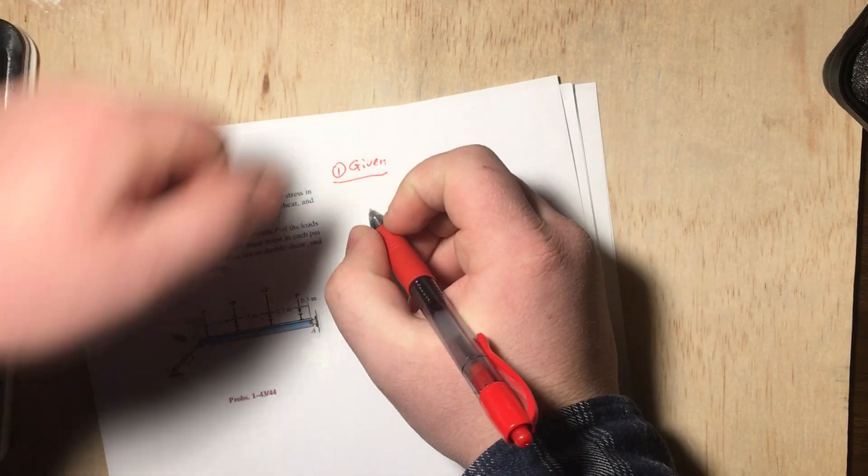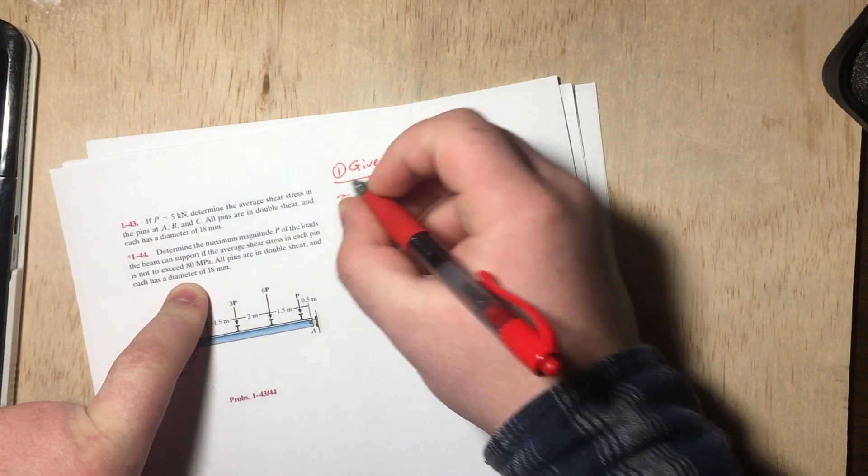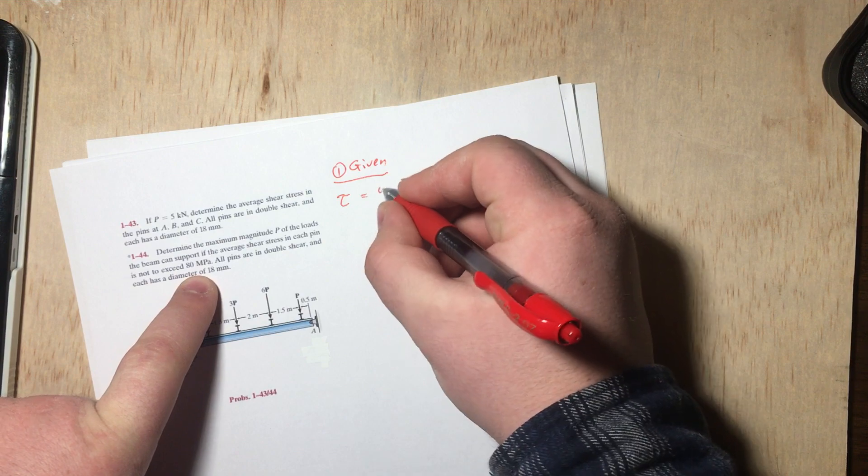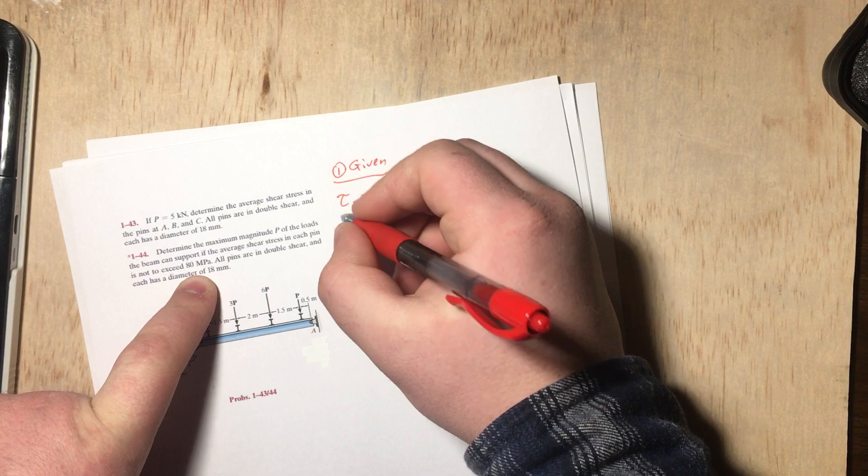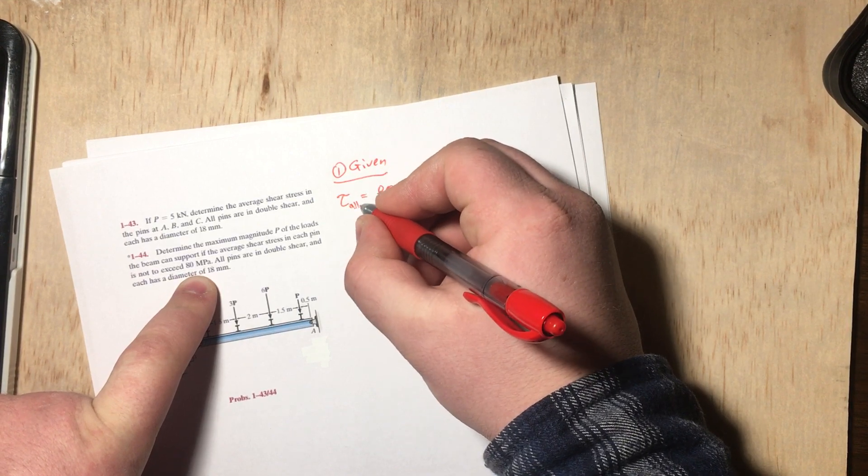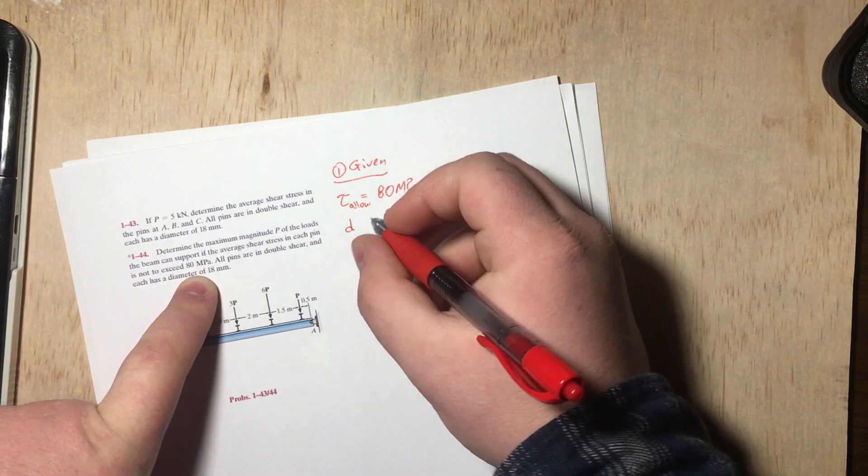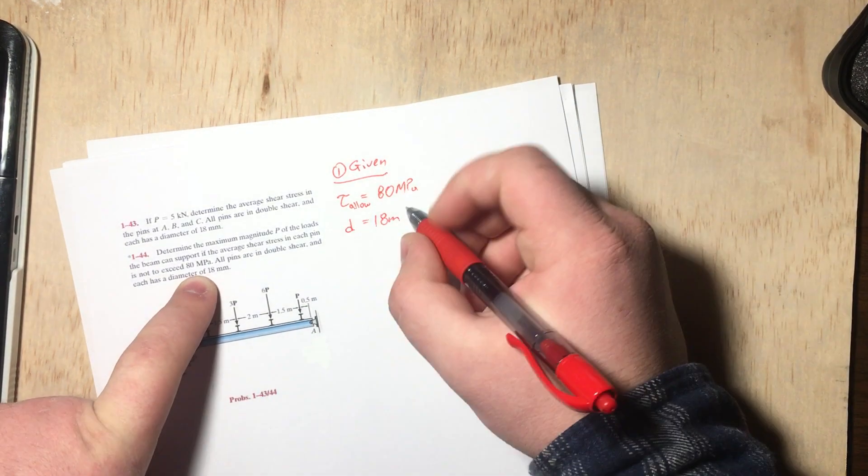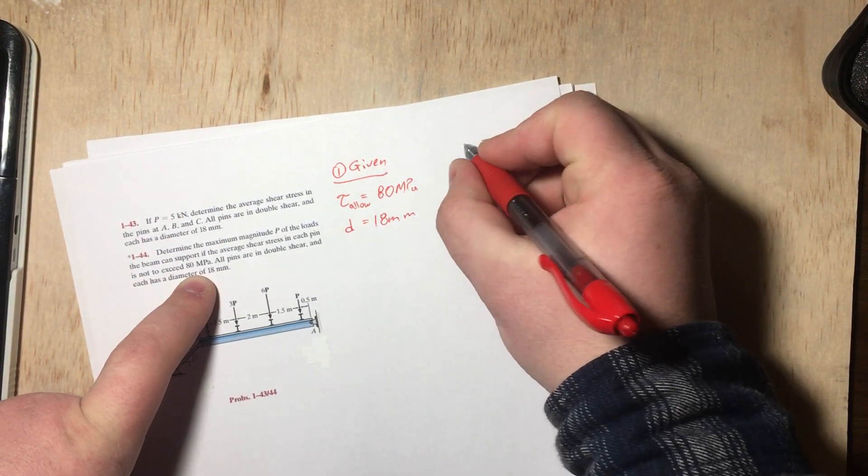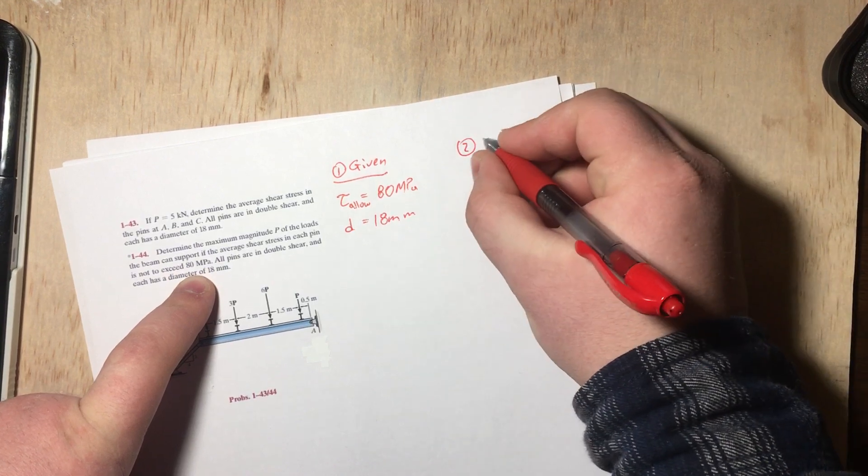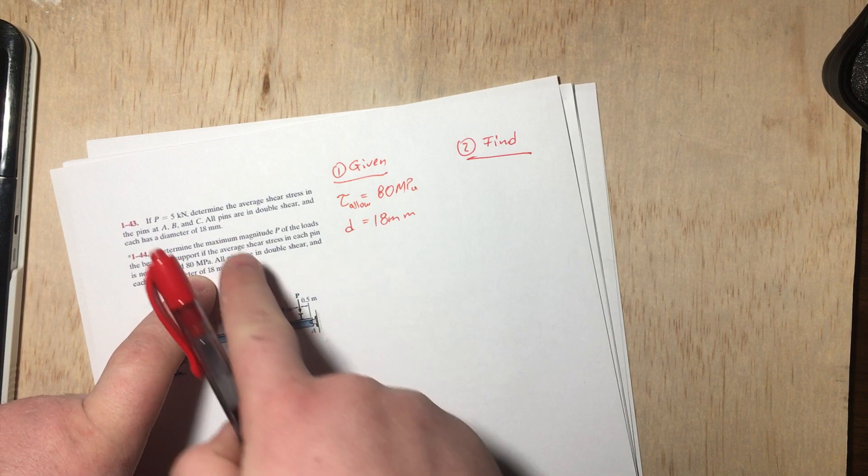Let's go ahead and always start with what's given. We're given that our tau maximum shear is going to be 80 MPa. This is the shear that we're allowed. We're also given that the diameter of each of the pins is 18 mm, same as in the previous question.